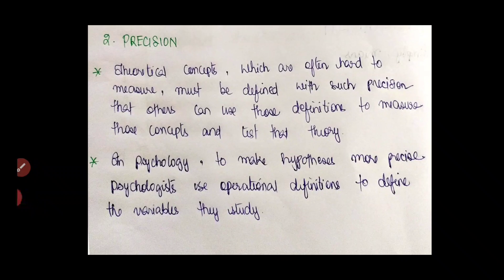Precision. So there are theoretical concepts in this world, which are very hard to measure sometimes. So those theoretical concepts must be defined. What do you mean by defined? That means they are supposed to have a very definite outline. They should be well specified with such precision that others can use those definitions. Others than yourself, other researchers than yourself can use those definitions to measure those concepts and test that theory.